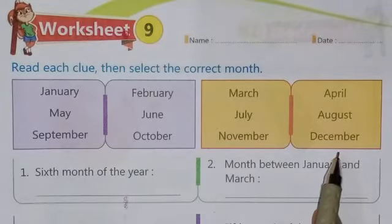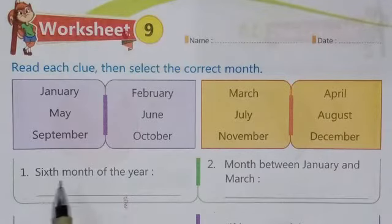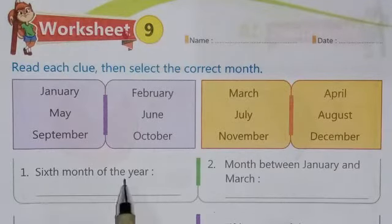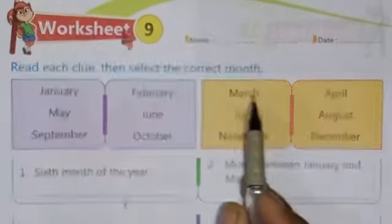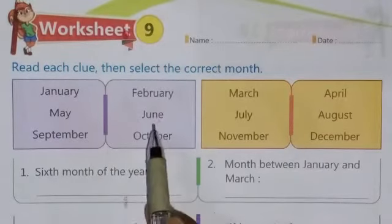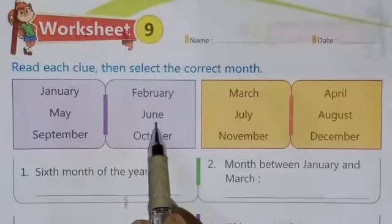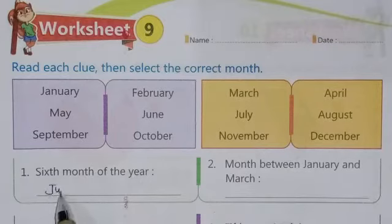Starting the first question: the sixth month of the year. Counting to six — one, two, three, four, five, six — the sixth month is June. So write June.